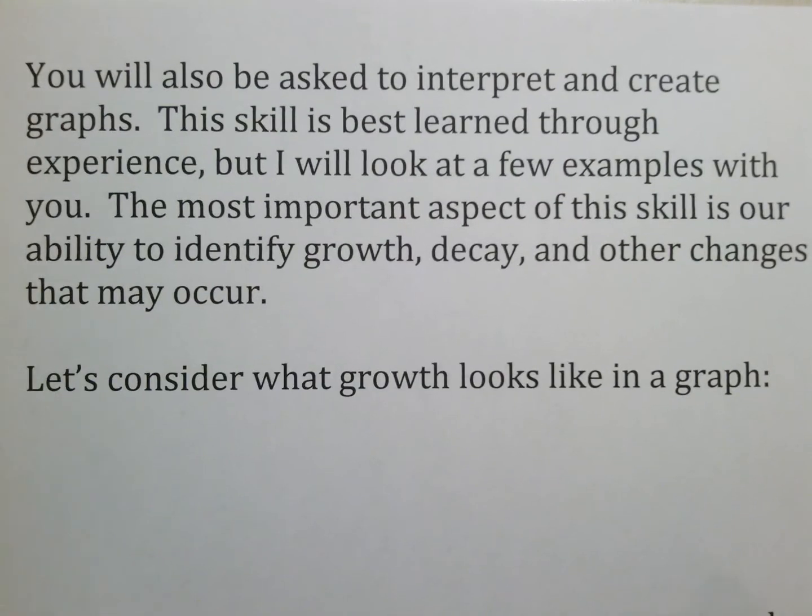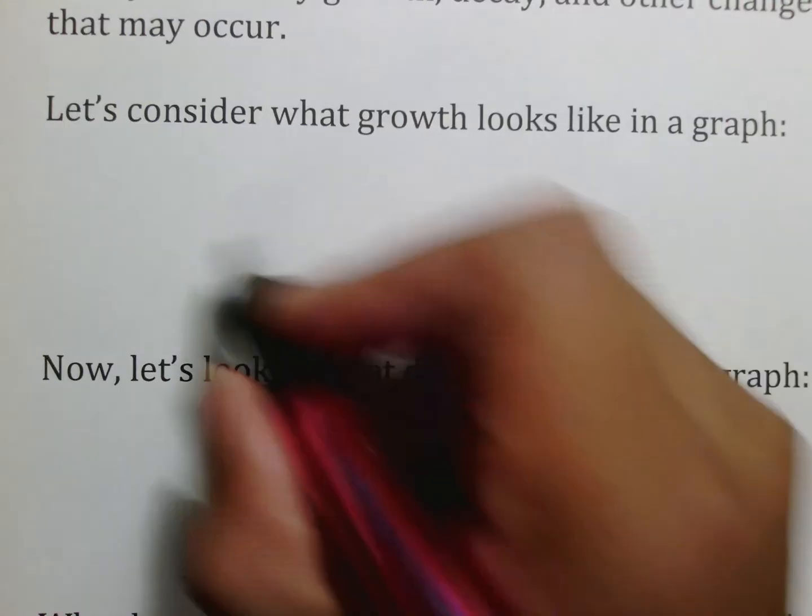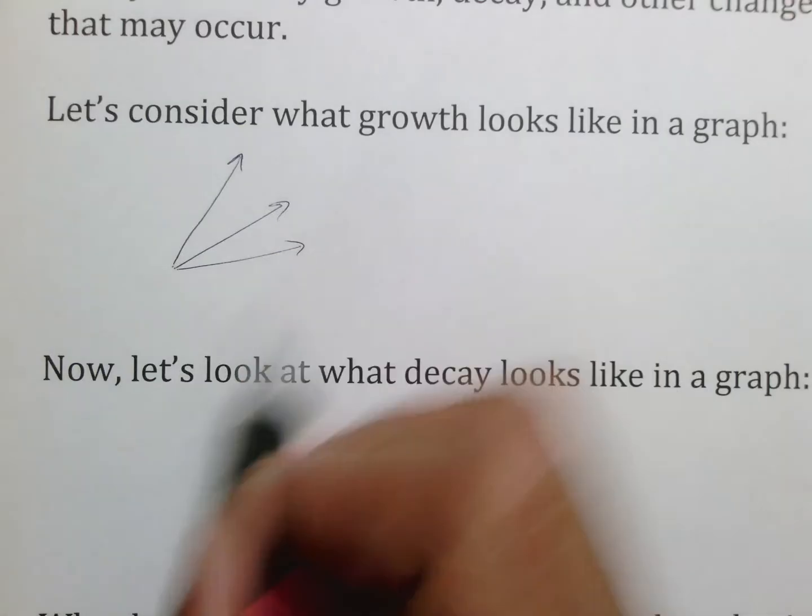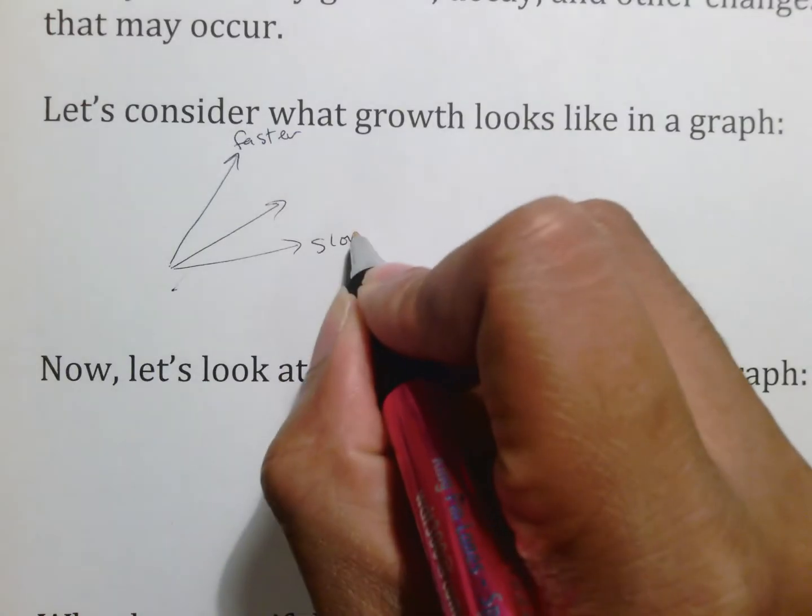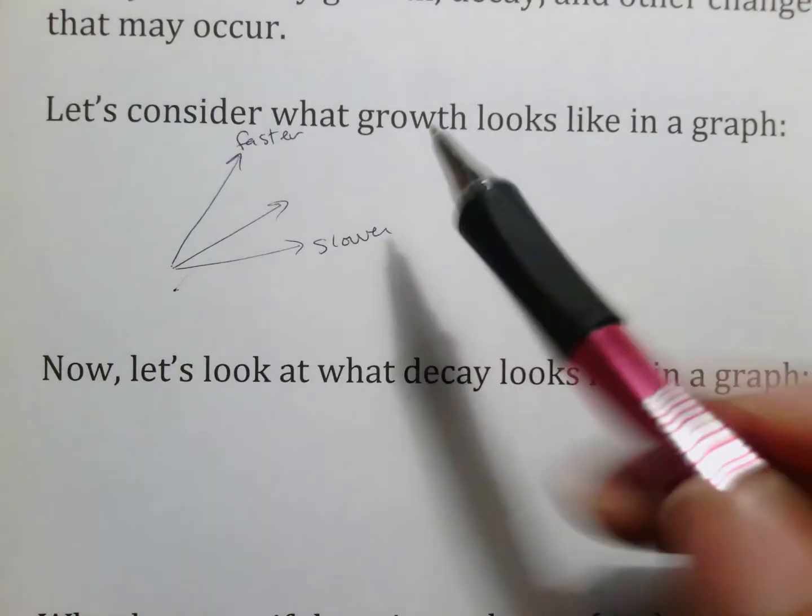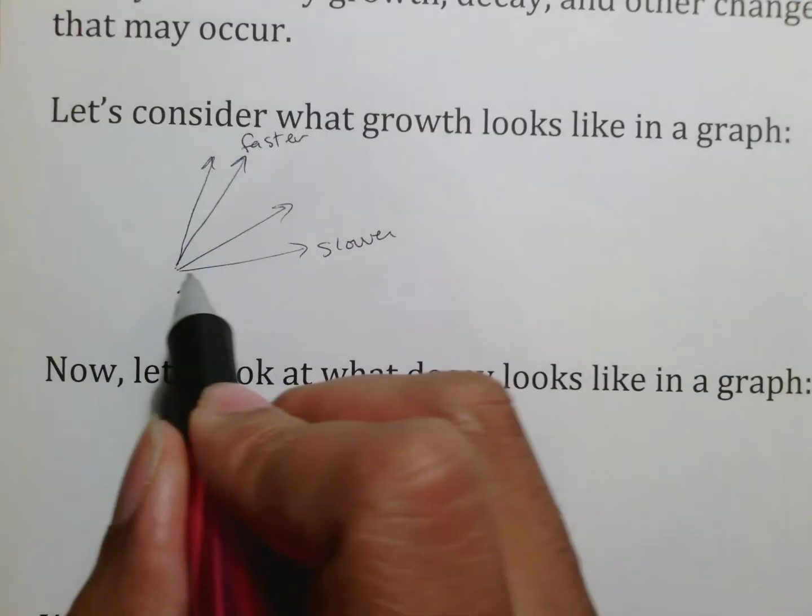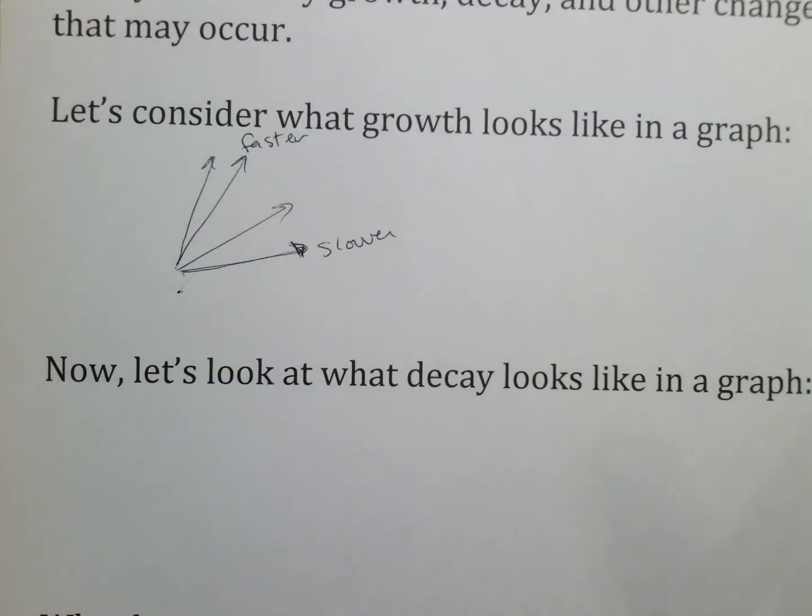You will be asked to interpret and create graphs, the skills best learned through experience. But I'll look at a few examples with you. The most important aspect of this skill is our ability to identify growth, decay, and other things that are going to occur. In terms of what growth looks like in a graph, remember that everything going forward, growth means that it would go in this direction. And it could go in any of those directions as long as it's going in an upward direction. Now what you need to understand is that this is faster growth and this is slower growth. This would be somewhere in between. But in terms of growth, if the line is going almost straight up, that means it's growing pretty fast. If it's barely going up a little bit, that means it's growing slowly.